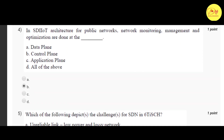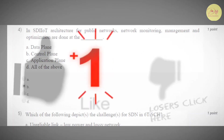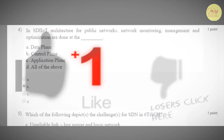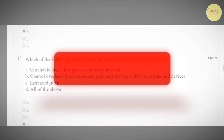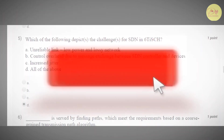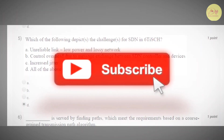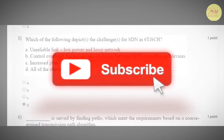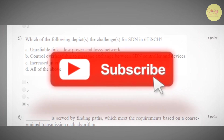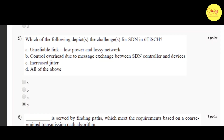Our fourth question is: in SDIIoT architecture for public networks, network monitoring, management, and optimization are done at which layer? The correct option is B — control plane.